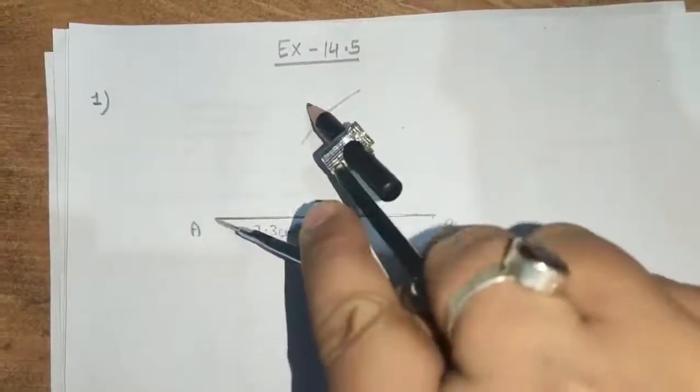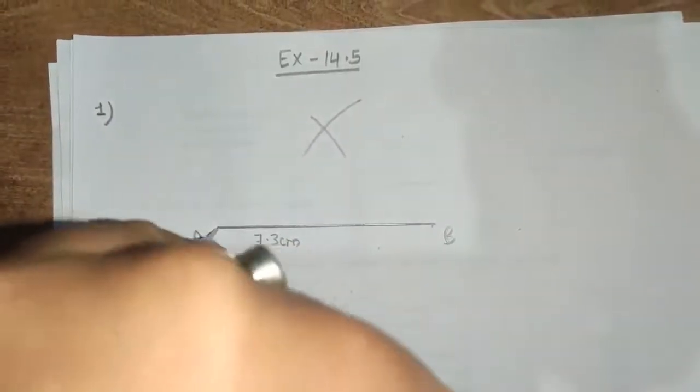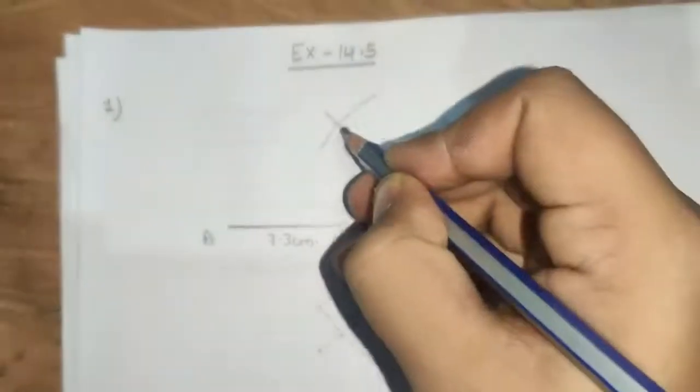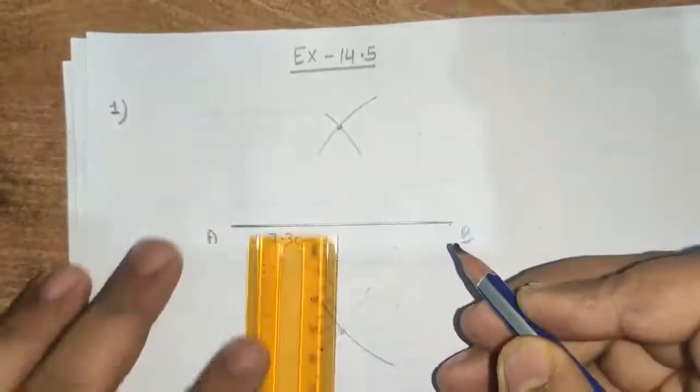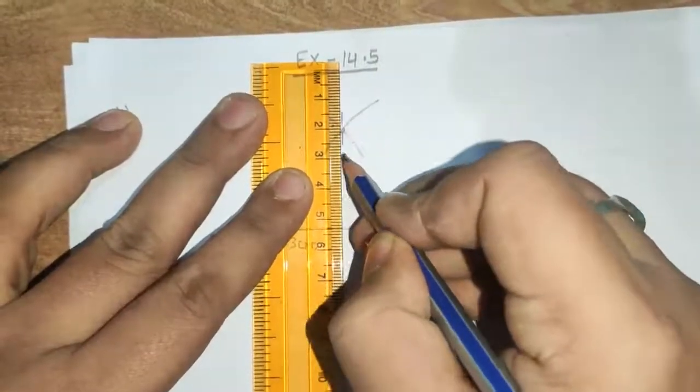Now, the second arc you will draw from A and then downside. Now, you will join these two points. You will join dotted line.